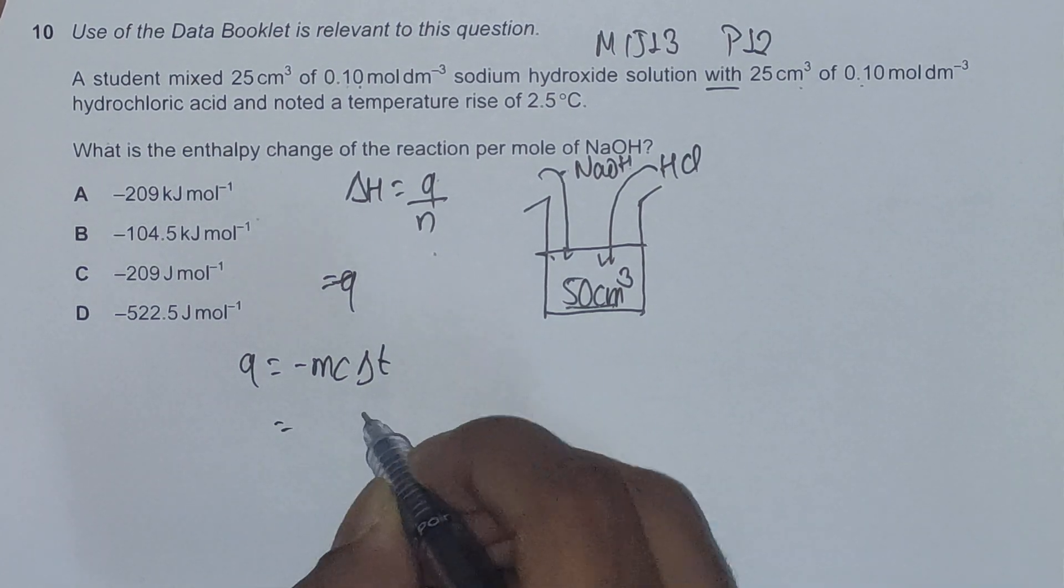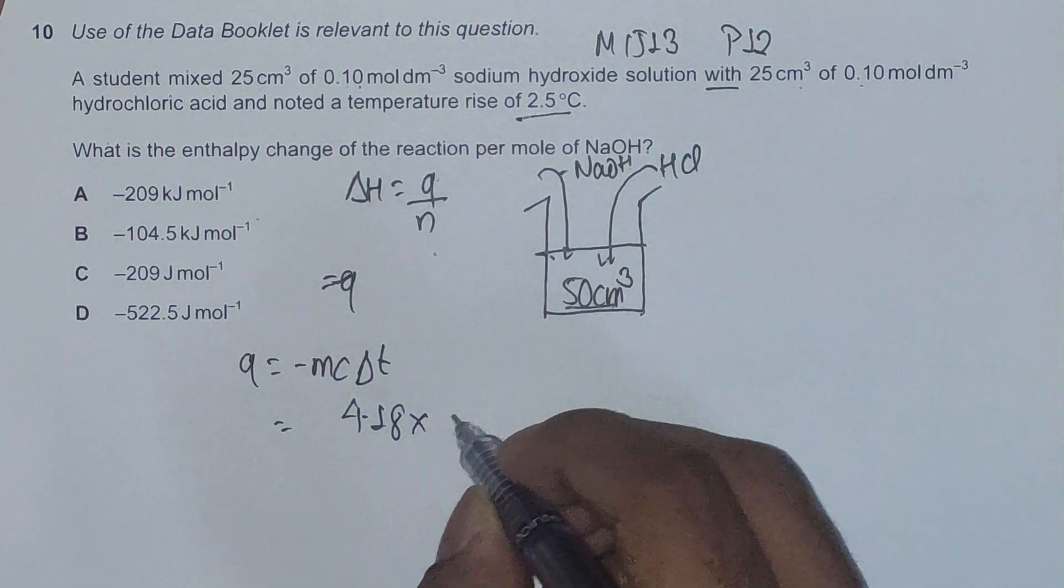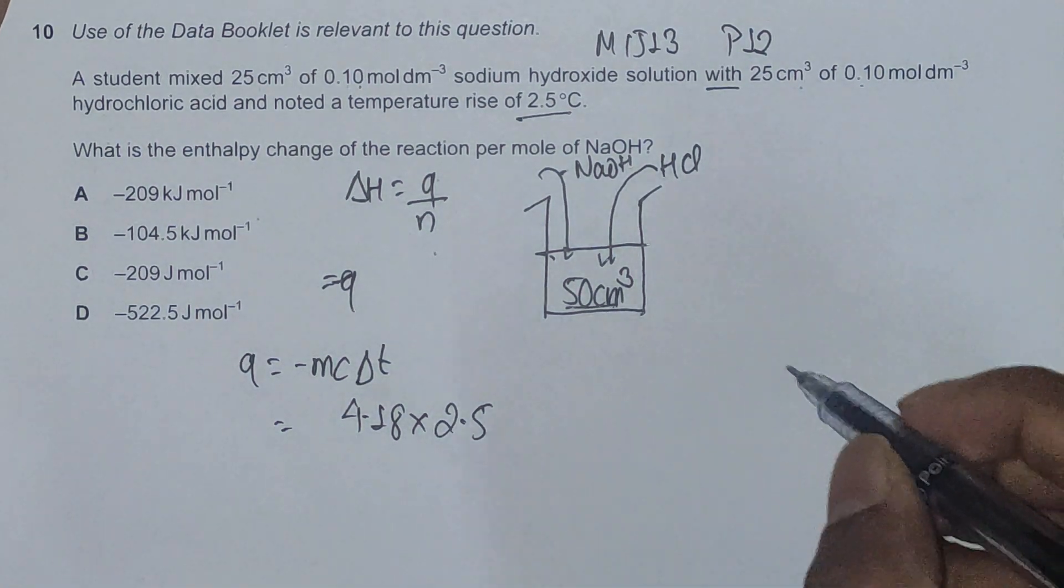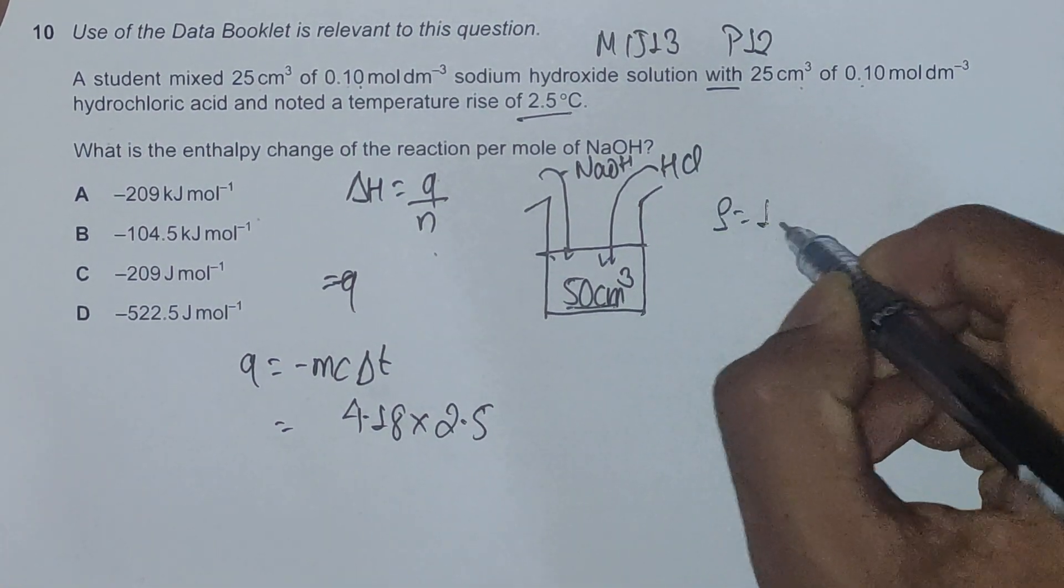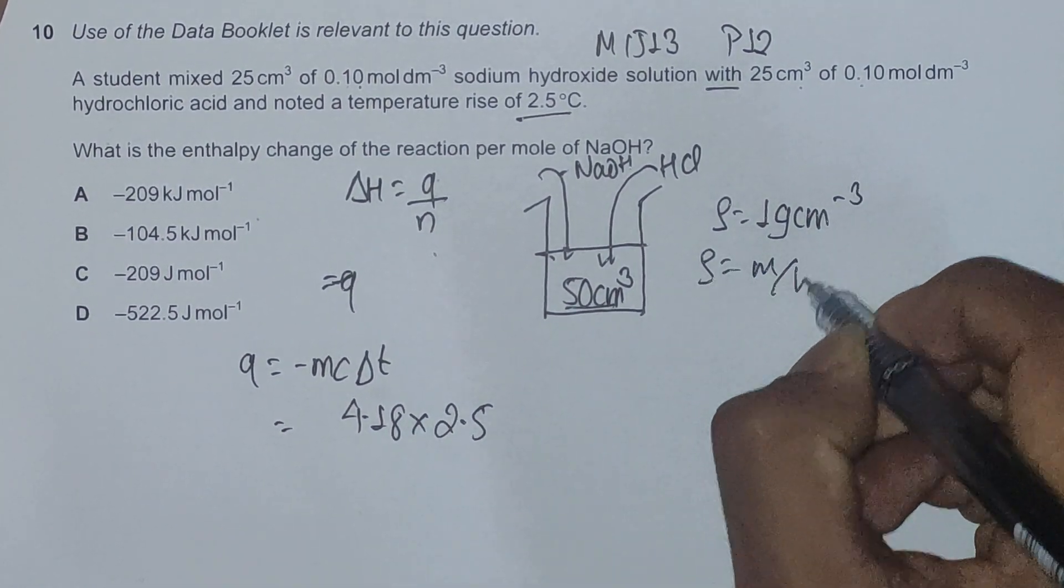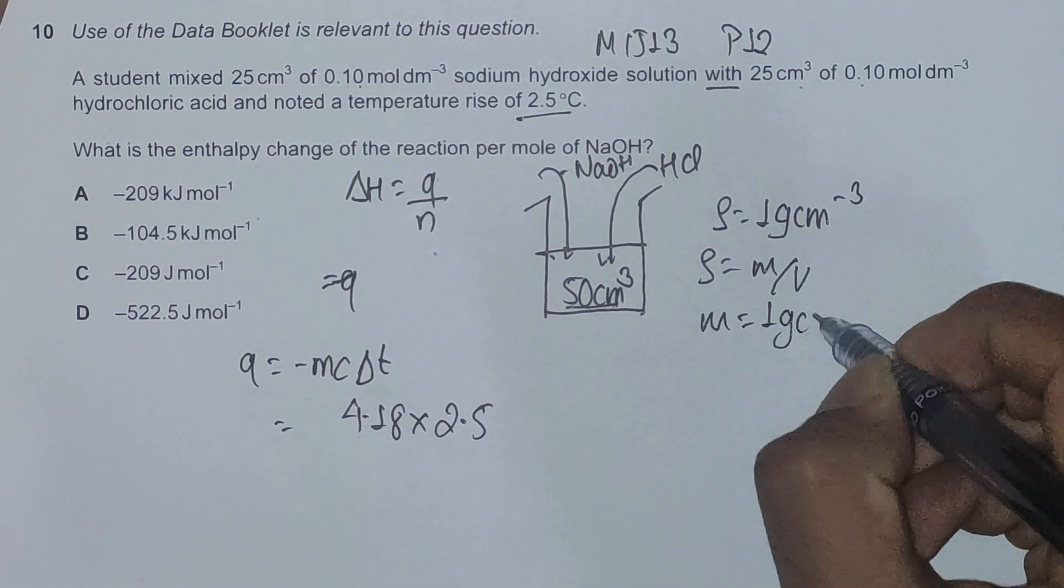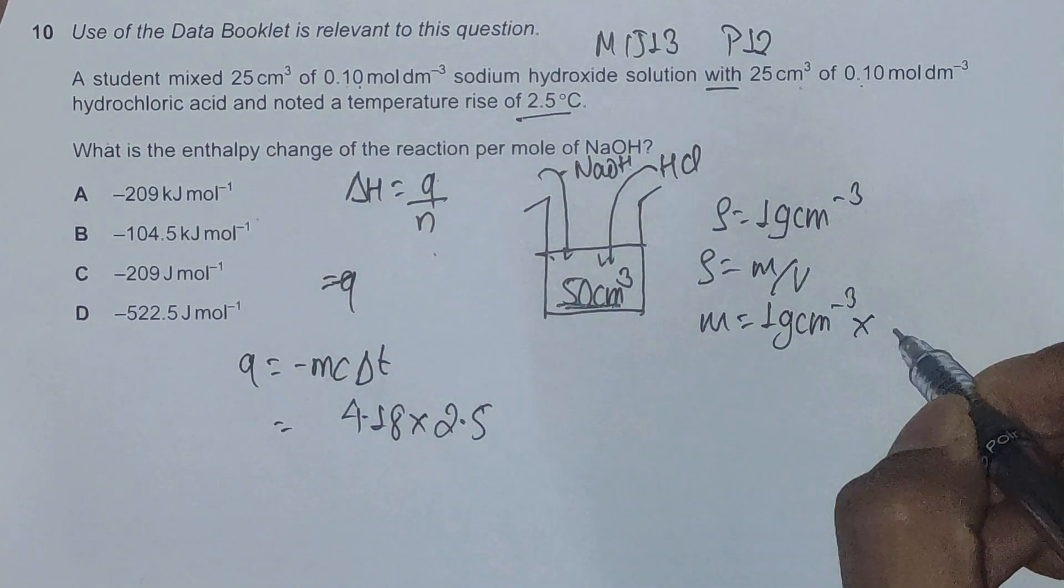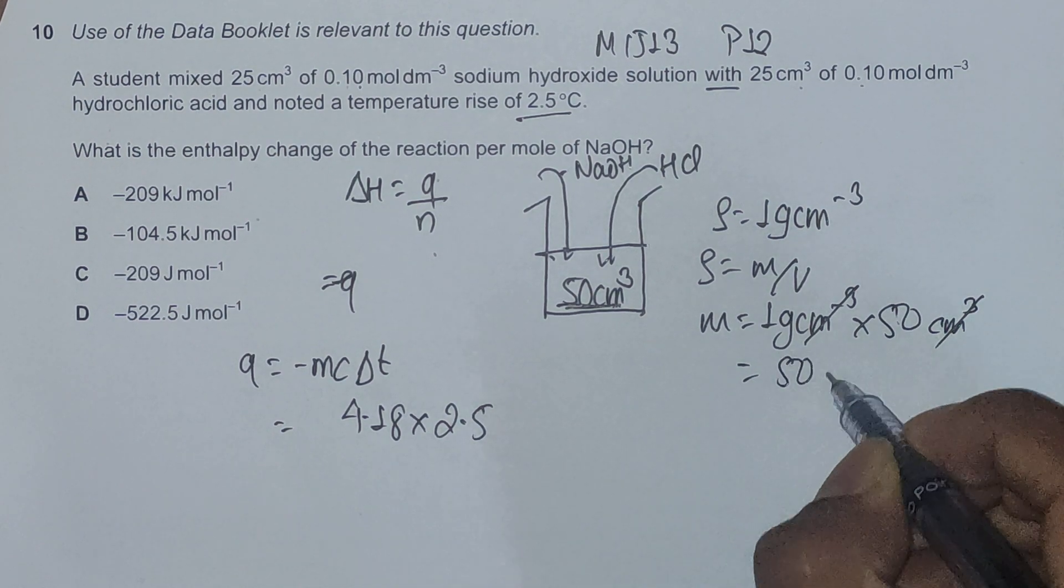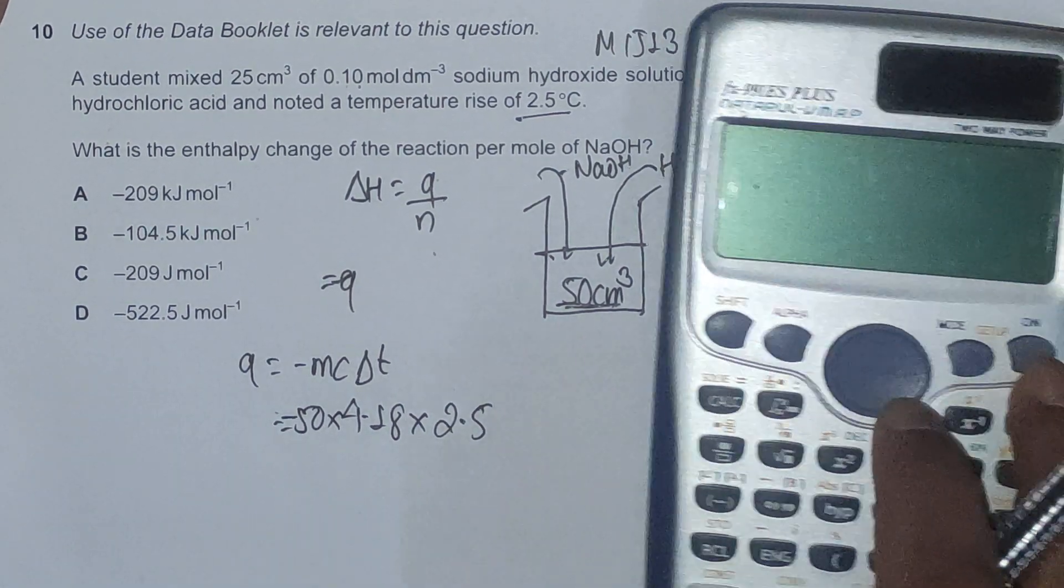We have c as 4.18, which is from the data booklet, and delta T is the temperature rise which we have been given as 2.5 degrees Celsius. Now, mass: the density of water is 1 gram per centimeter cubed, and as density is mass divided by volume, the mass would be density multiplied by volume, which is 1 gram per cm³ multiplied by 50 cm³. This cancels out and we have mass as 50 grams. So 50 times 4.18 times 2.5 equals negative 522.5 joules.